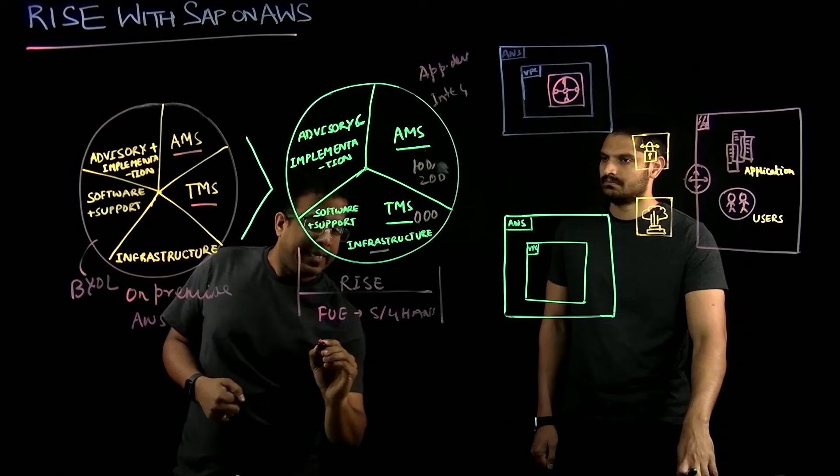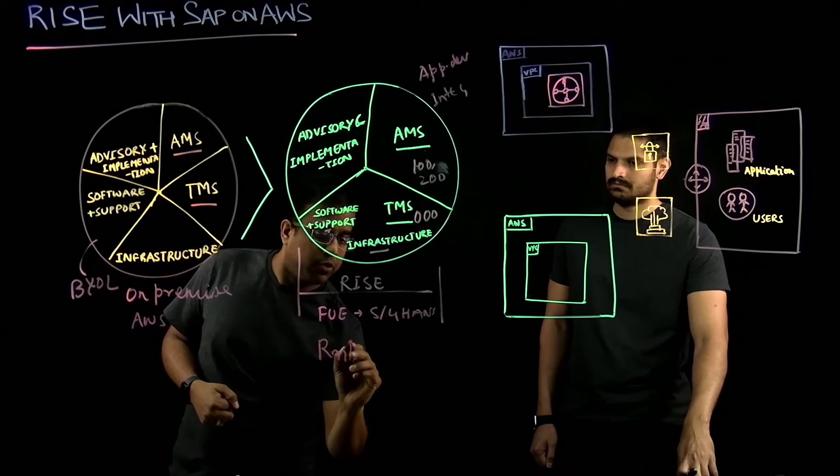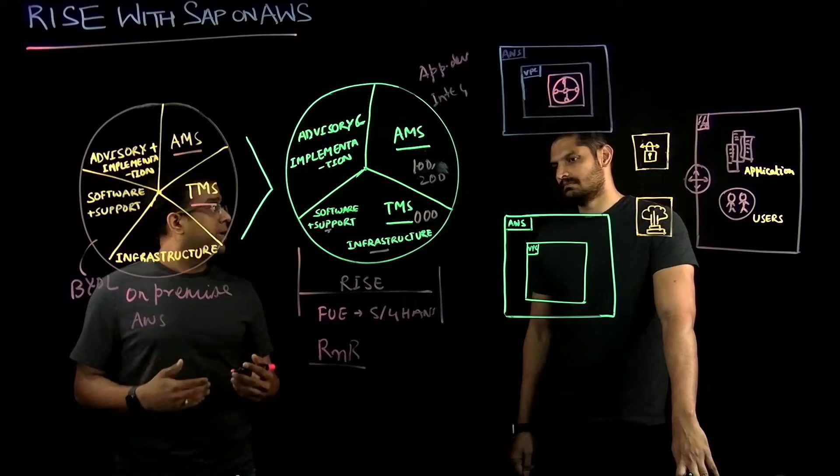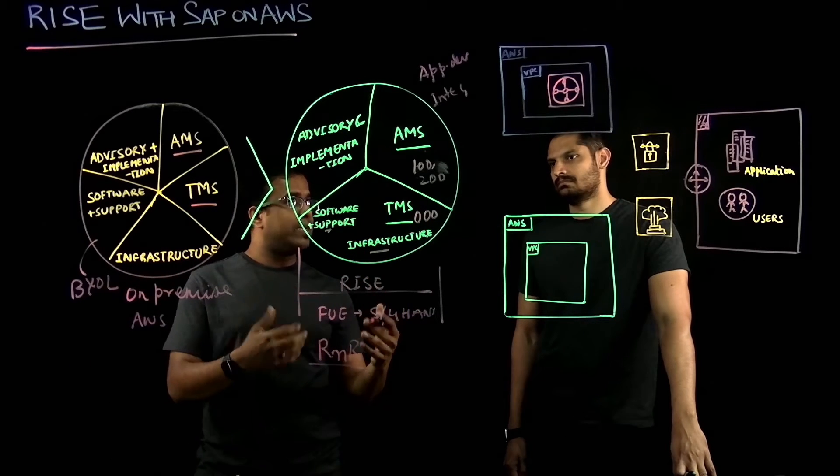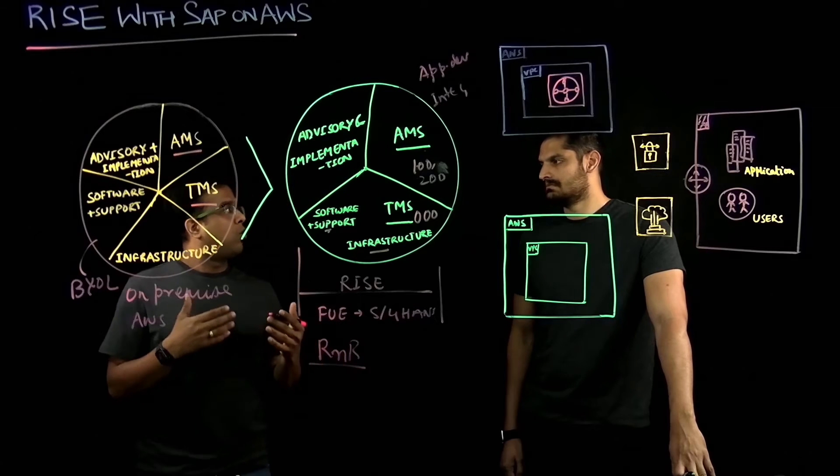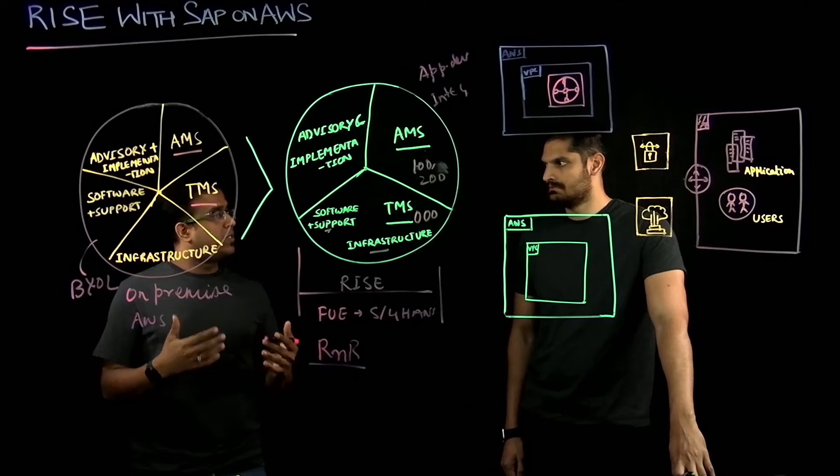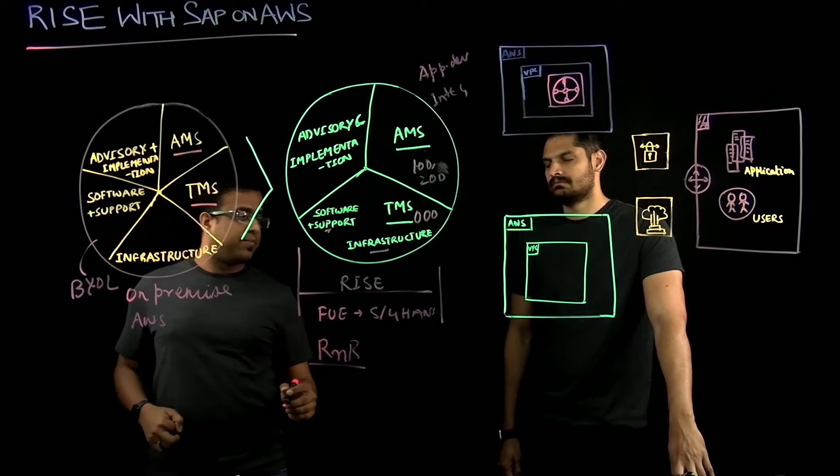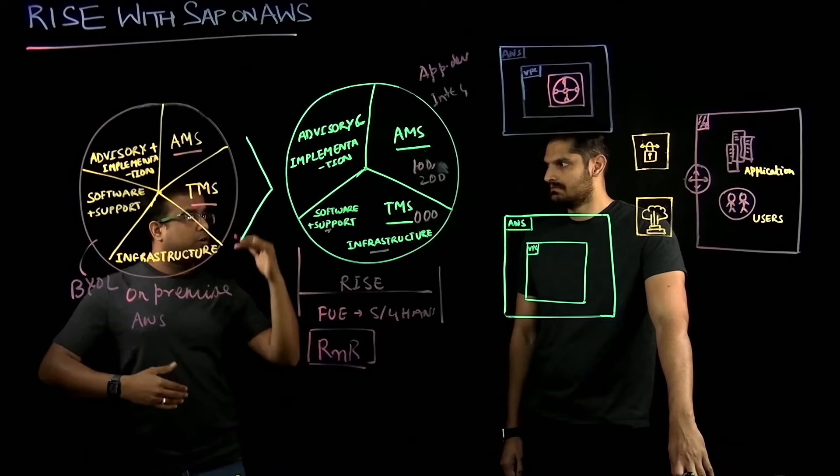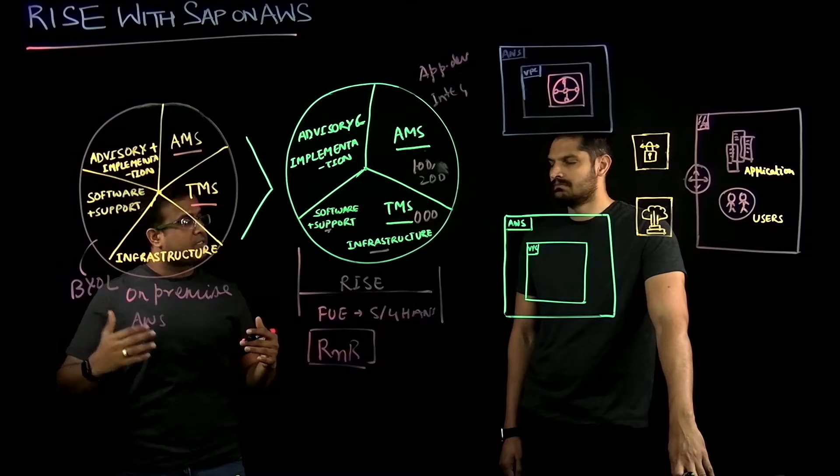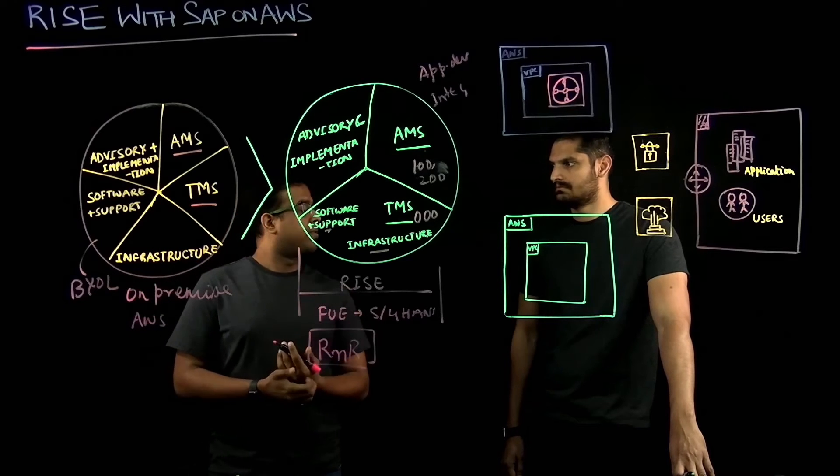SAP has released a detailed R&R document, they also call it roles and responsibility under Rise, where they have detailed out the technical managed services offering and what is optional or what is standard by Rise with SAP on AWS. So there is a detailed R&R document which you can refer for details of what is covered as part of technical managed services and what is covered as part of application managed services.